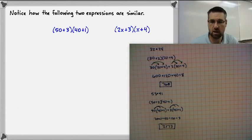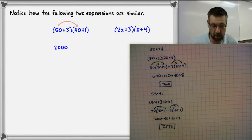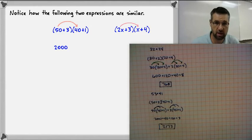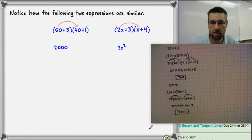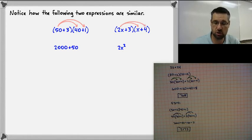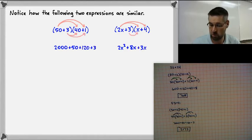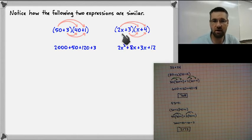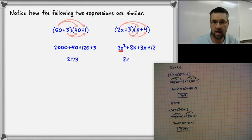Now let's use this to multiply binomials. We had (50 plus 3) times (40 plus 1). Doing the same process with binomials: 2x times x — adding exponents — gives 2x squared. Then 2x times 4 is 8x. Then 3 times x is 3x. And 3 times 4 is 12. Now we can combine like terms: x squared is alone, 8x plus 3x is 11x, and then 12. So our answer is 2x squared plus 11x plus 12.